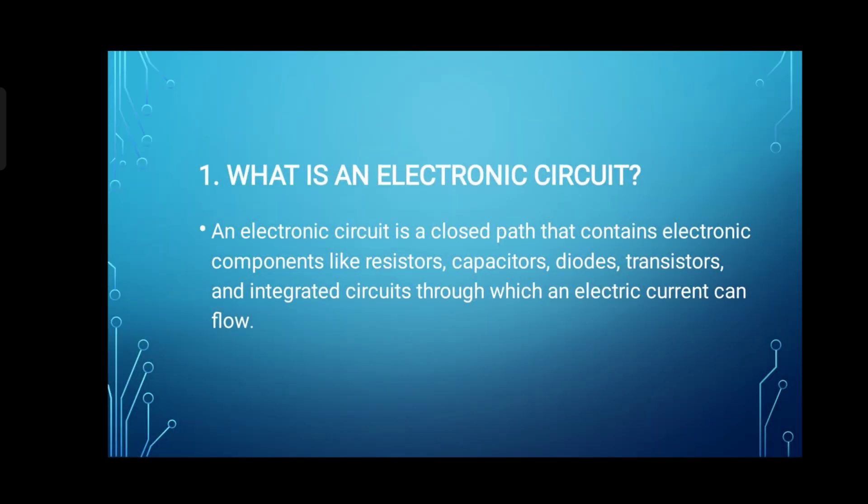1. What is an electronic circuit? An electronic circuit is a closed path that contains electronic components like resistors, capacitors, diodes, transistors, and integrated circuits through which an electric current can flow.